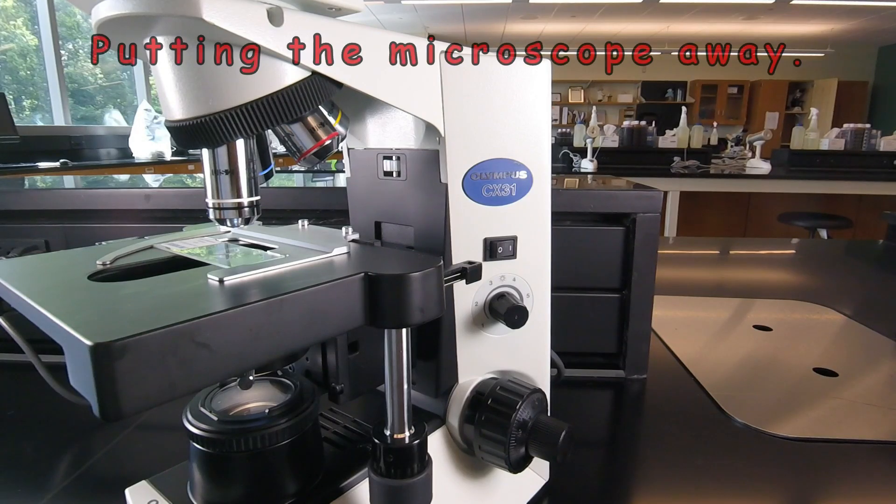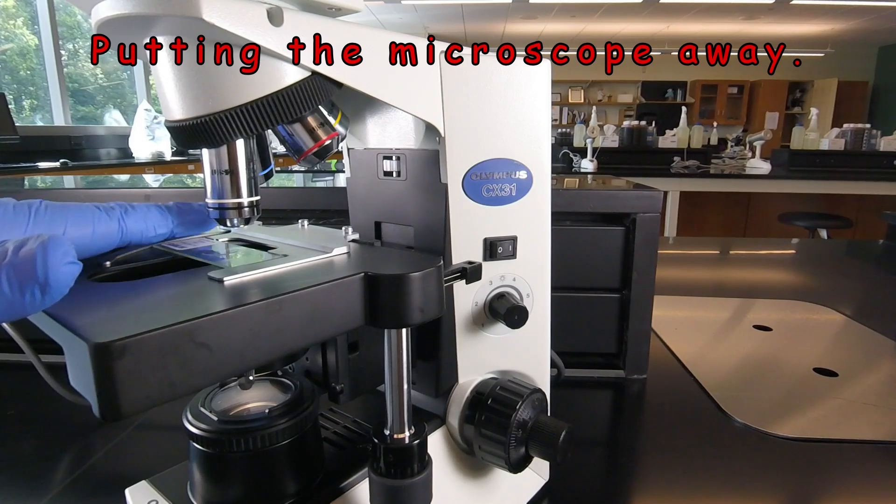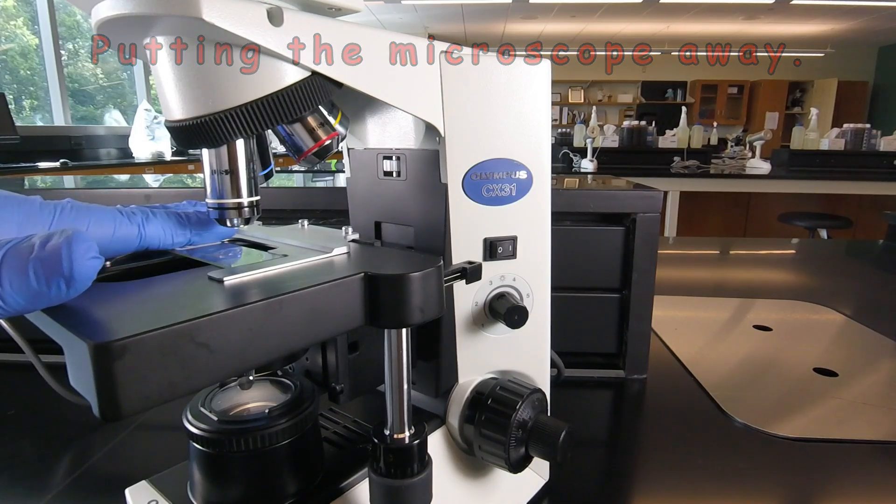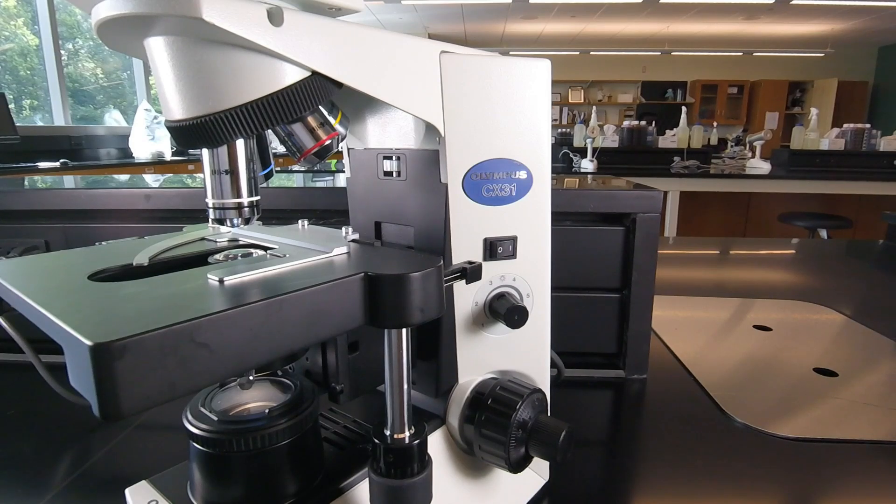When we're finally done for the day, we need to put the microscope away correctly. First thing is to make sure that you remove any slides from the microscope. Don't leave them on the microscope when you put it away. If it's a slide you made, those are disposable, so they'll go in the broken glass container. If it's a prepared slide that we're providing, then return the slide to the appropriate tray.